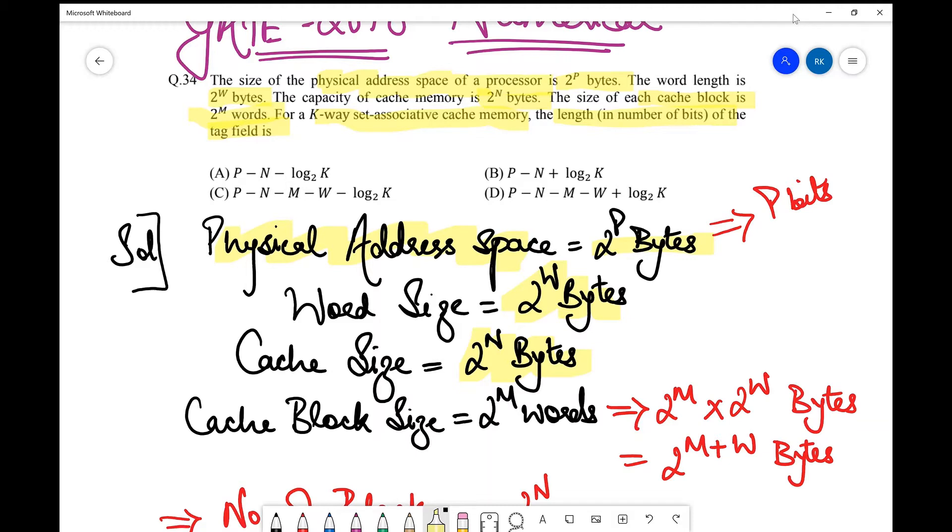The cache block size is given as 2^m words. Note that this is in words, so we need to convert it into bytes. For that, we multiply it with the word size and get 2^m × 2^w. When you multiply according to the exponential law, the exponents get added, so this comes out to be 2^(m+w) bytes.